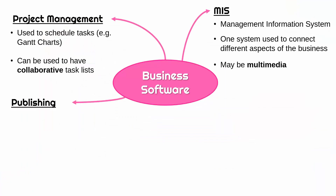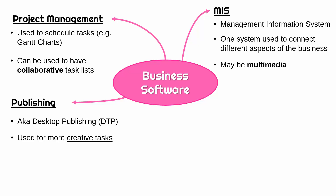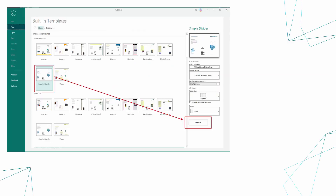A third example is publishing software, also called desktop publishing software or DTP — so if you see DTP, that means it's publishing software. These are for more creative tasks, things which are more visually appealing than just a word document. Often templates are included to help you get started. Microsoft Publisher is an example; something like Photoshop and InDesign you could argue are DTP examples too.